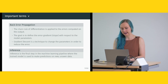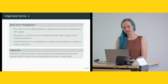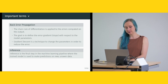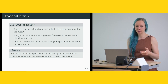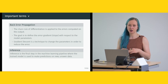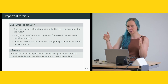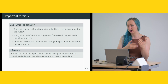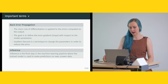Back-error propagation means the chain rule of differentiation is applied to errors computed on the output. In neural networks you have multiple stages through which a result is propagated; at the end you calculate the cost or error and must propagate it back to the beginning weights or parameters to change how the model works. The goal is to define the error gradient — the slope — with respect to the model parameters, and gradient descent changes these parameters to reduce the error.